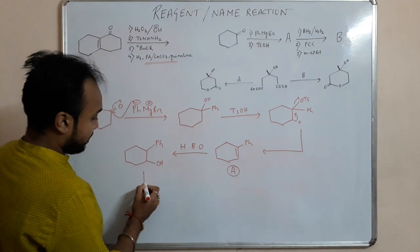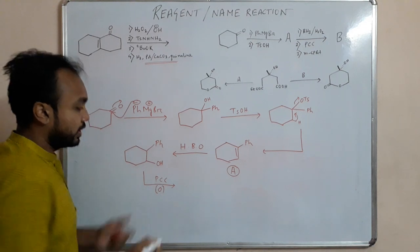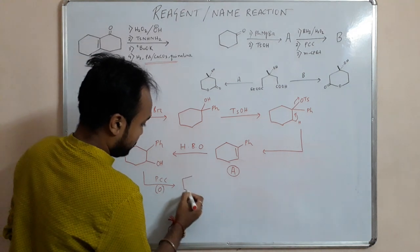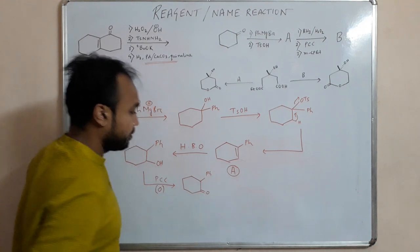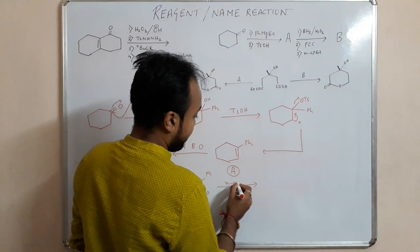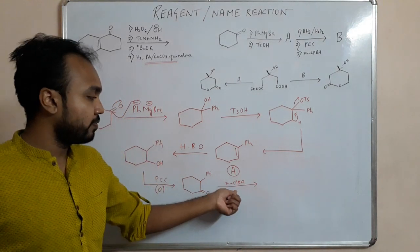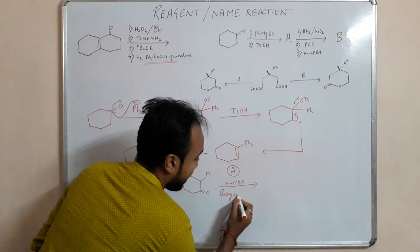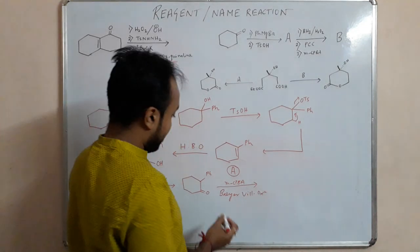So it will prefer this site, boron will prefer this side and OH will form in this side only. So what will happen? After you do hydroboration oxidation reaction it will form like this. Next what happens? Next we are giving PCC. PCC is an oxidizing agent so it will oxidize the alcohol to a ketone.